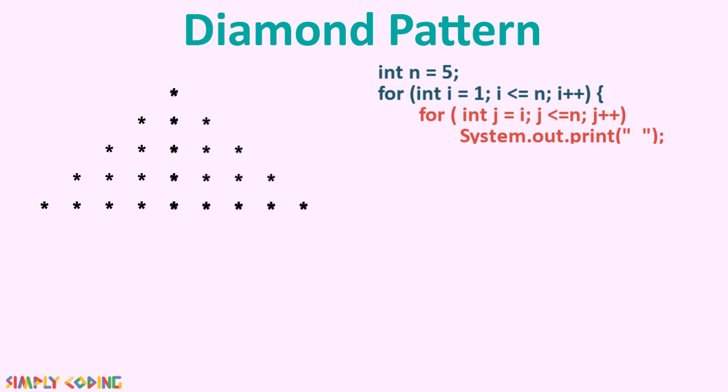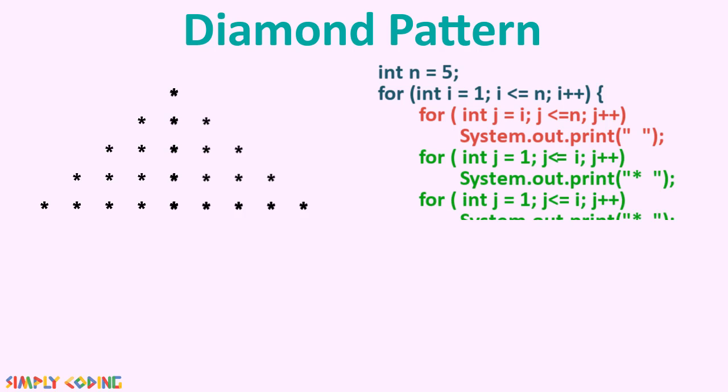Don't forget to put the empty println as the last statement. When we run it, you see we get the two triangles, but we do not get the peak. There is actually one extra column in the center we want to get rid of.